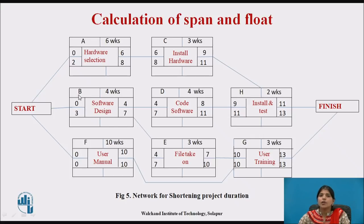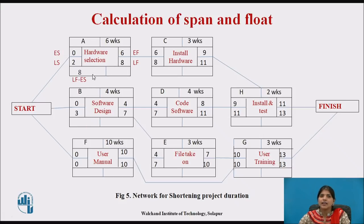For the calculation of span and float: the table shows earliest start, earliest finish, latest start, and latest finish dates. Activity span equals latest finish minus earliest start — for example, 8 minus 0 gives 8. Float is calculated as the difference between start dates or finish dates. For example, 8 minus 6 gives a float of 2.